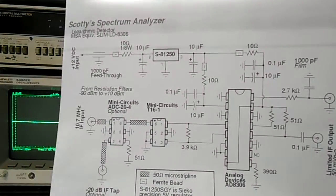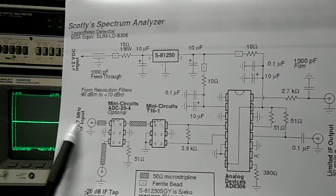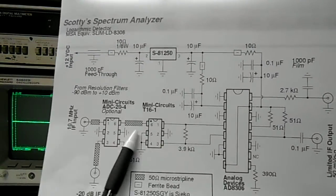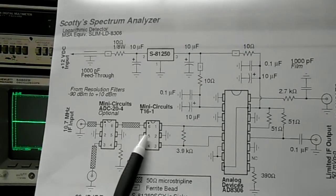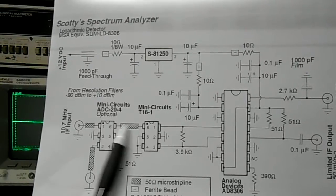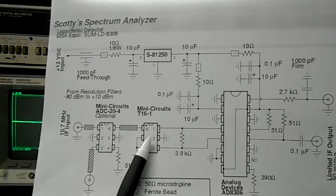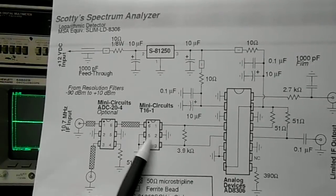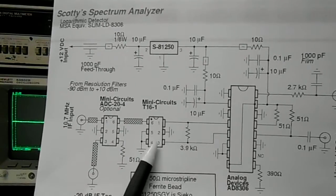Here's an overview of the schematic. The input is 50 ohms and we need to use a matching transformer. I'm using a Mini Circuits T16-1. This is a 1 to 16 ohm ratio transformer.